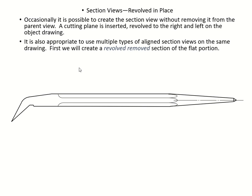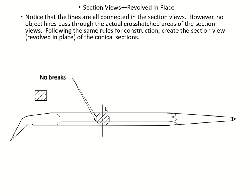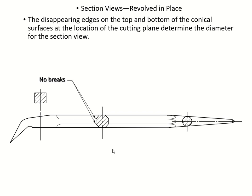The next application is revolve in place, using the same object. You create a revolved section view of the octagon portion, but this time you put it straight into the object — there are no breaks. We call this method 'revolve in place' because you're revolving right there inside the object, not outside. We draw the cone not outside of the object but inside of the object — rotating inside — and that's the name of the application: revolved in place.